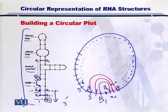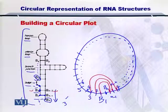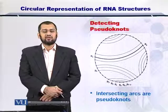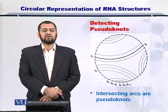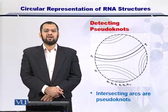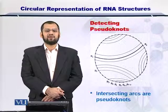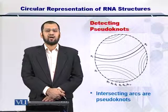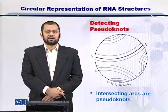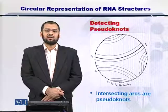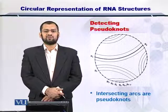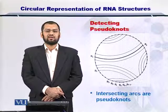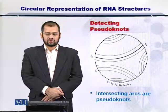Once you have drawn arcs between the coupled nucleotides present in the RNA secondary structure, then you will have something like this in front of you. The important thing here is that all of these arcs start from a nucleotide and end at the complementary nucleotide. However, if one of the arcs intersects with another arc, which is going from some other nucleotide to its complementary nucleotide, then this represents a pseudoknot.